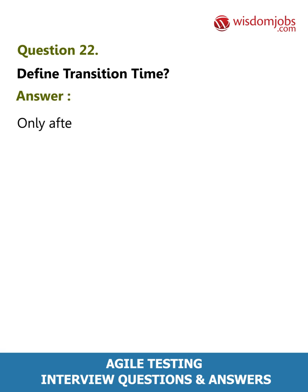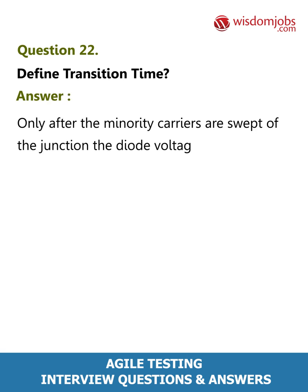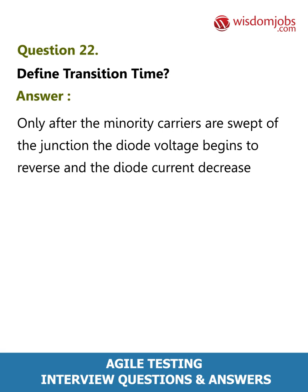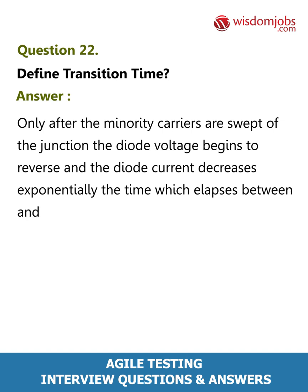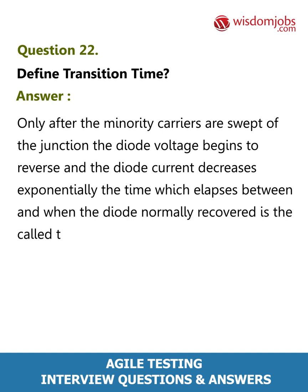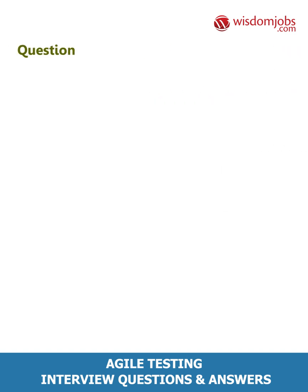Question 22: Define transition time. Answer: Only after the minority carriers are swept off the junction does the diode voltage begin to reverse and the diode current decreases exponentially. The time which elapses until the diode has normally recovered is called transition time.